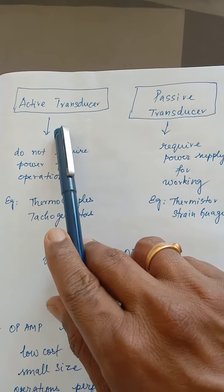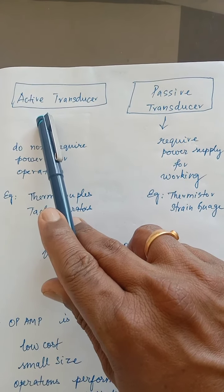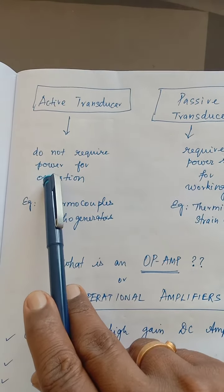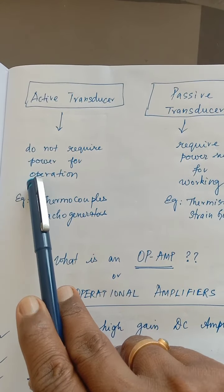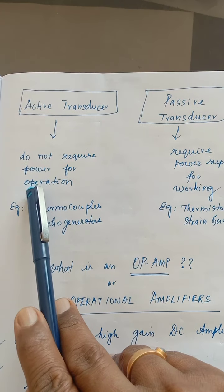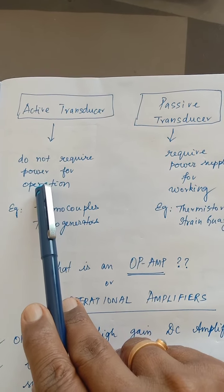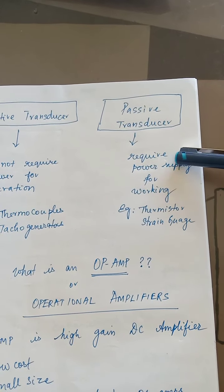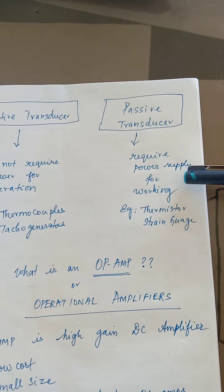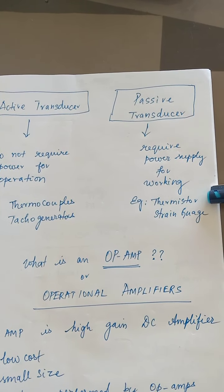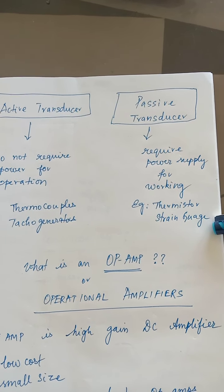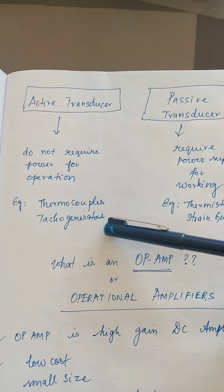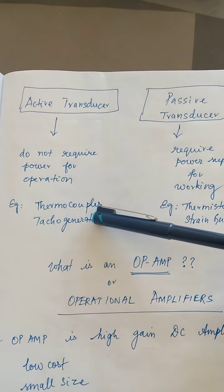If you look at two types of transducers, you can use a passive transducer and an active transducer. An active transducer requires a power supply. Examples of active transducers include thermistor, strain gauge, thermocouples, and tachogenerators.